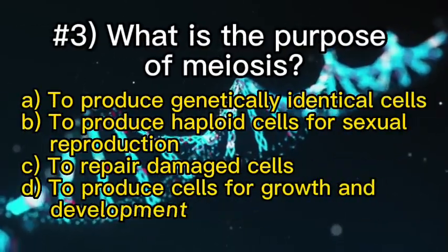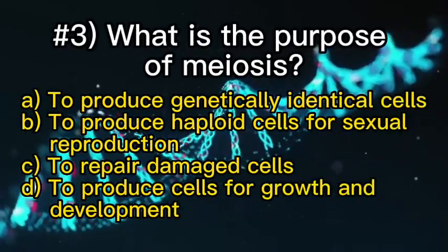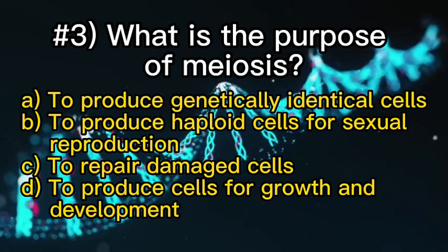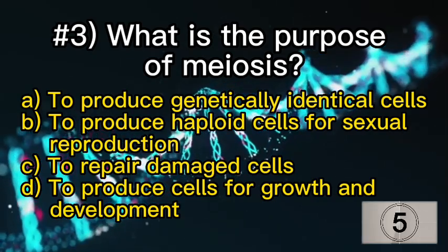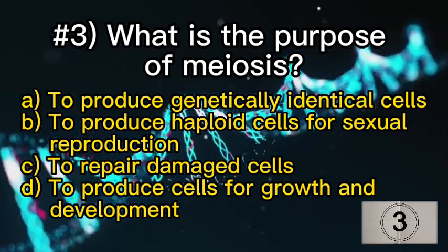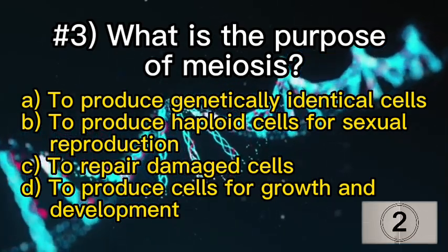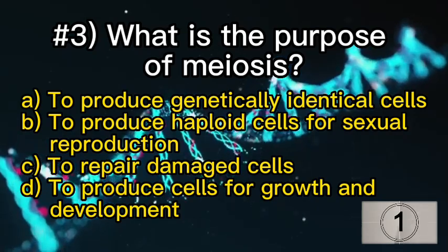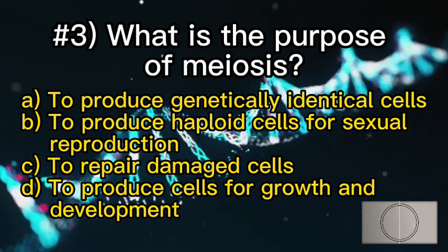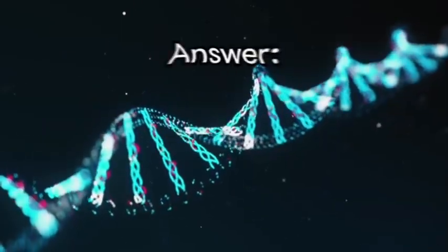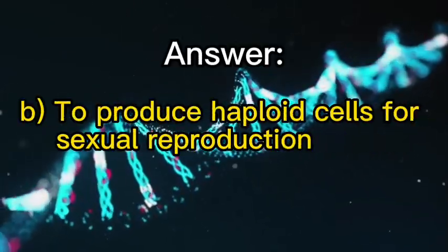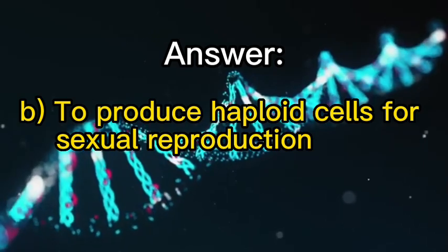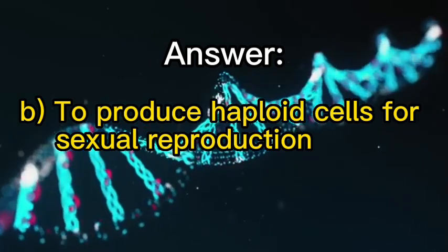Number three: what is the purpose of meiosis? B — to produce haploid cells for sexual reproduction.